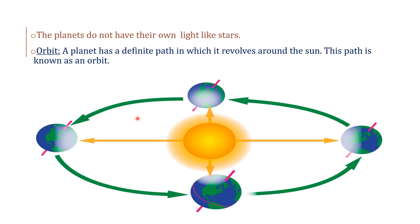Orbit - a planet has a definite path in which it revolves around the sun. This path is known as an orbit. This is the sun. This is the earth. This path is known as an orbit. In this path, the earth revolves around the sun.